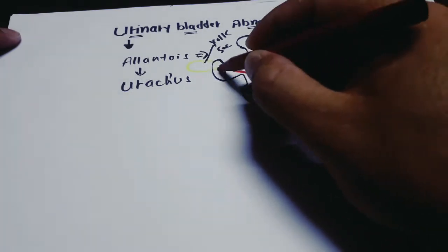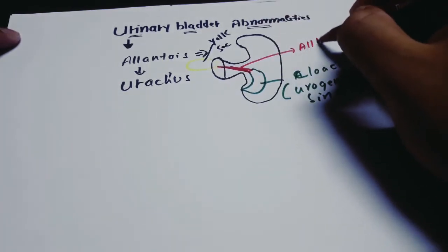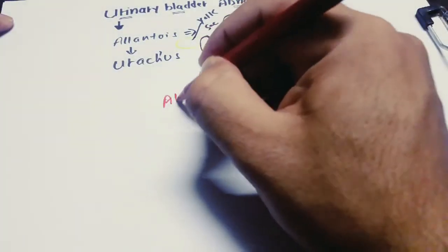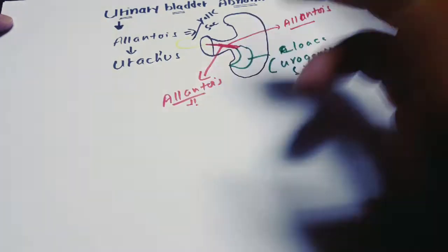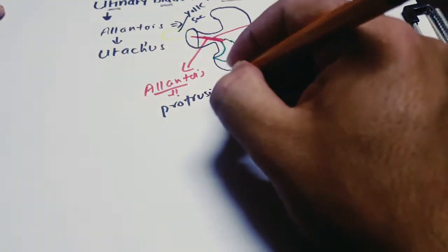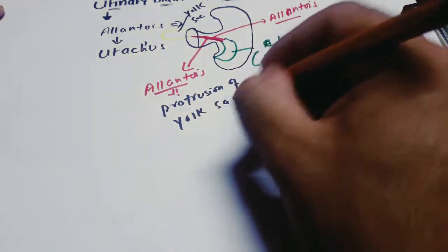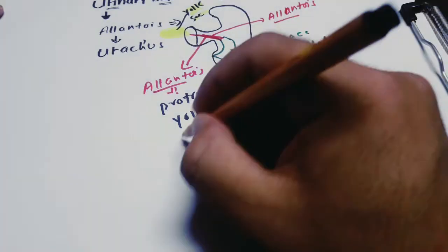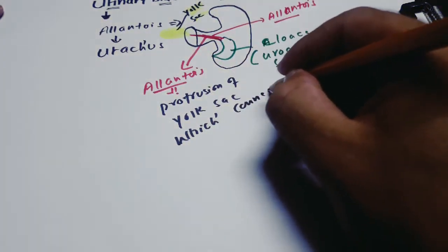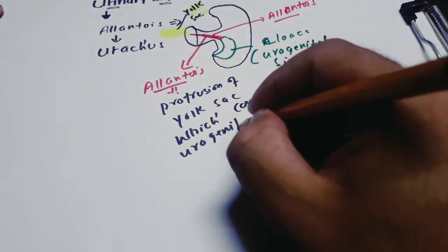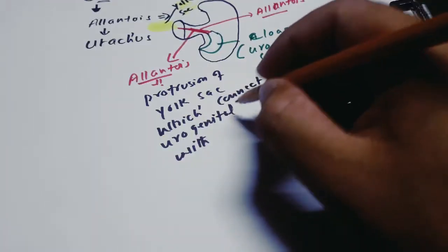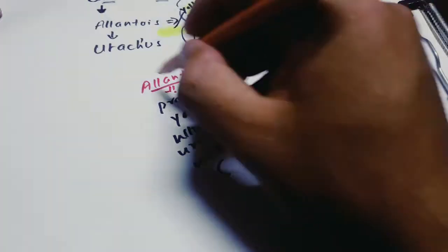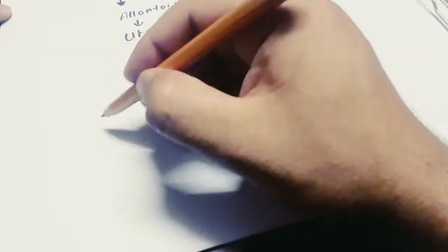The protrusion from the yolk sac which connects the yolk sac with the urogenital sinus is called the allantois — you can see the red one in the diagram. So the allantois is the protrusion of the yolk sac, or the part of the hindgut, which connects the yolk sac with the urogenital sinus. Later on, this allantois is going to form the urachus.